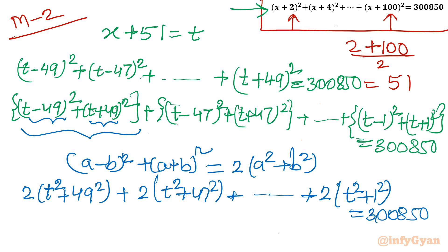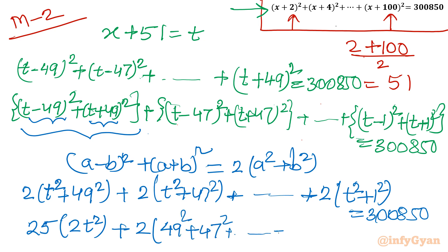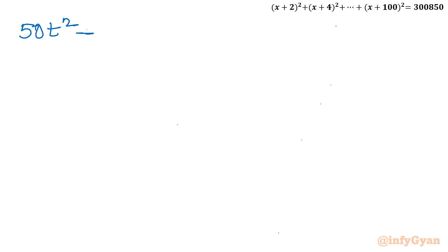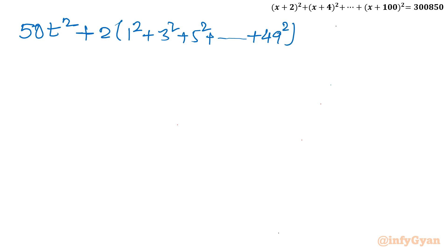How many t² terms are there? There are 25 such pairs, so we have 25 × 2t² = 50t². Then taking 2 common from the constant terms, the equation becomes 50t² + 2(49² + 47² + ... + 1²) = 3850, which is 50t² + 2(1² + 3² + 5² + ... + 49²) = 3850.